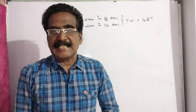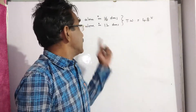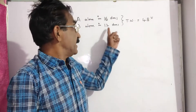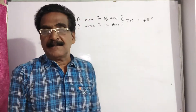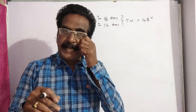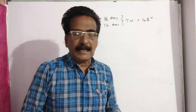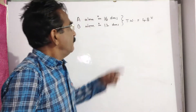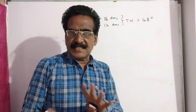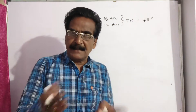Hi friends, good morning. Let us take up the next problem. A alone can do a work in 16 days, B in 12 days. If they work on alternate days with A beginning first, in how many days will the work be completed? Alternate days means first day A comes, second day B comes.